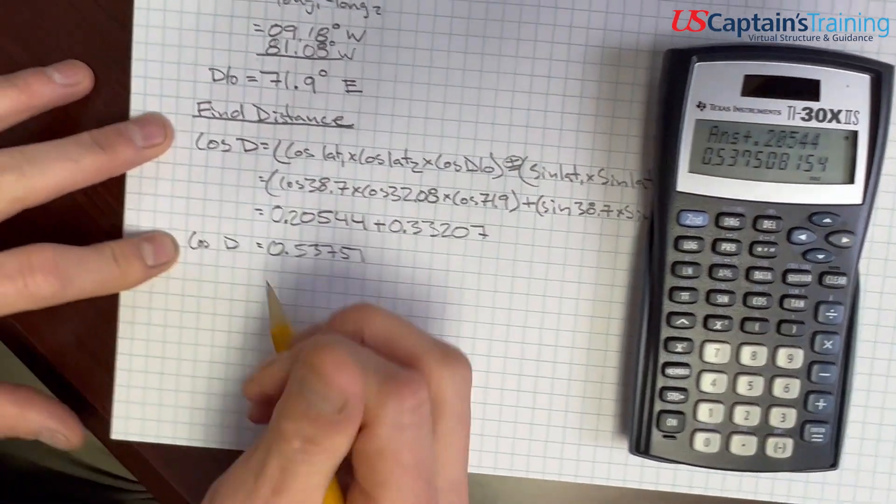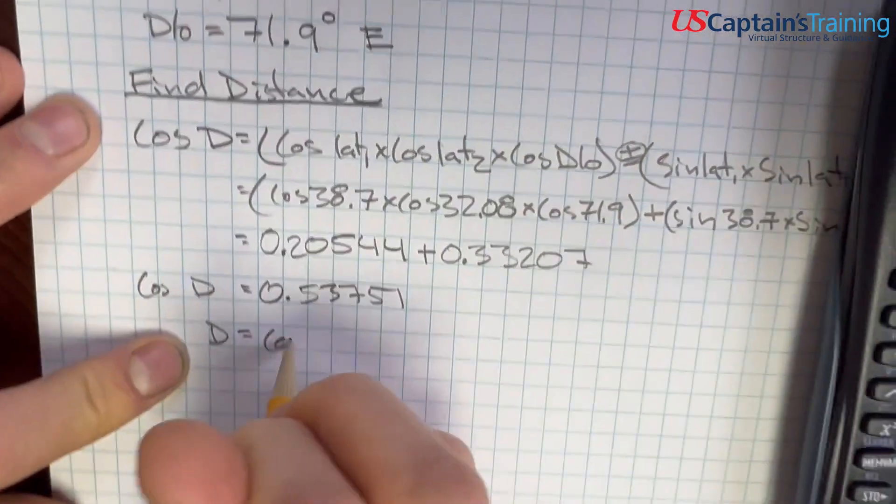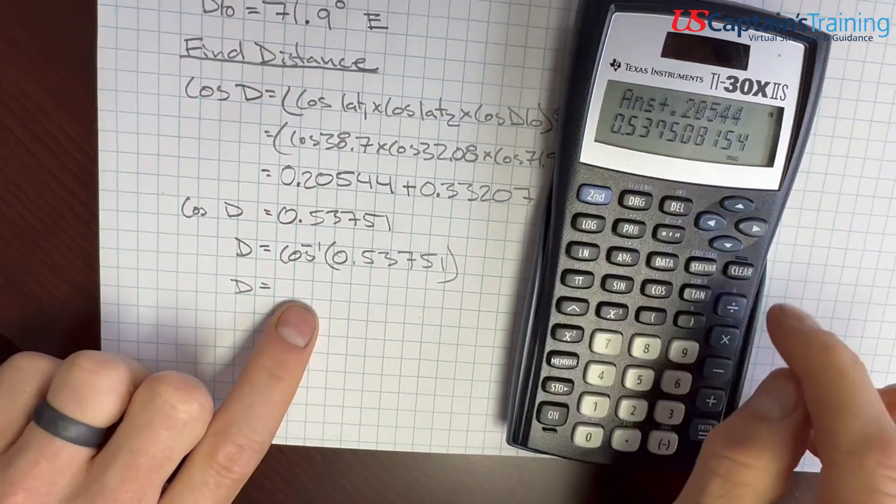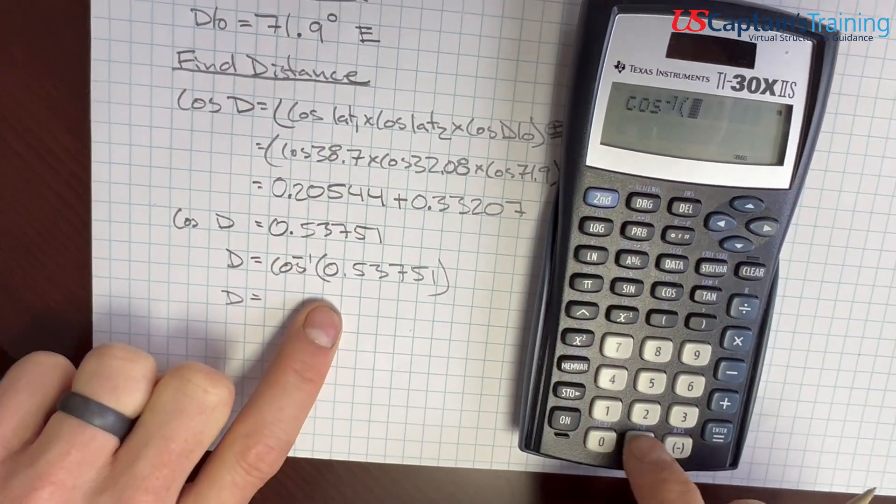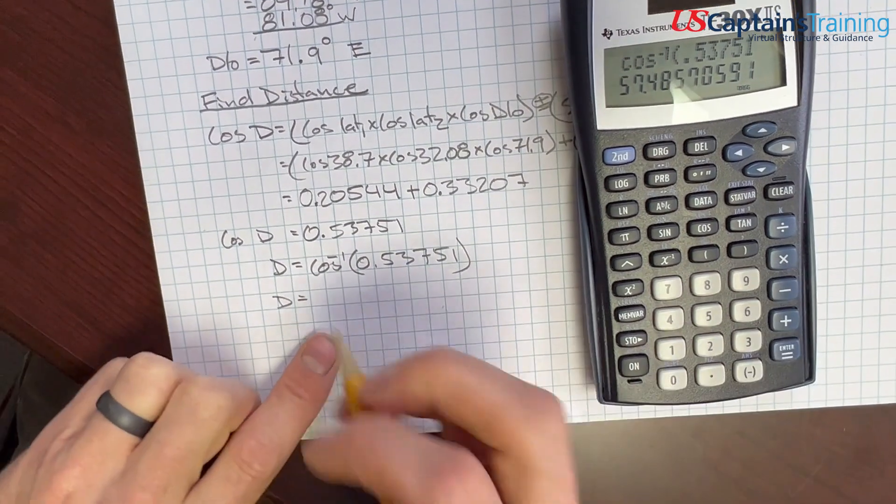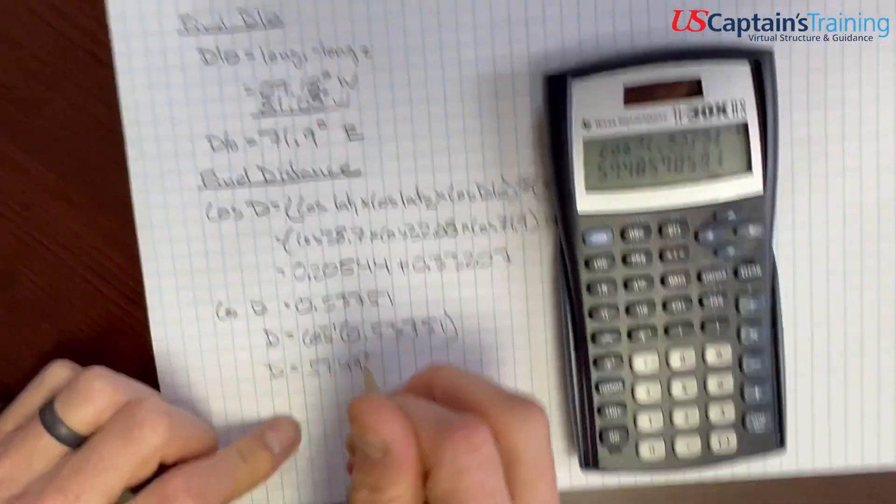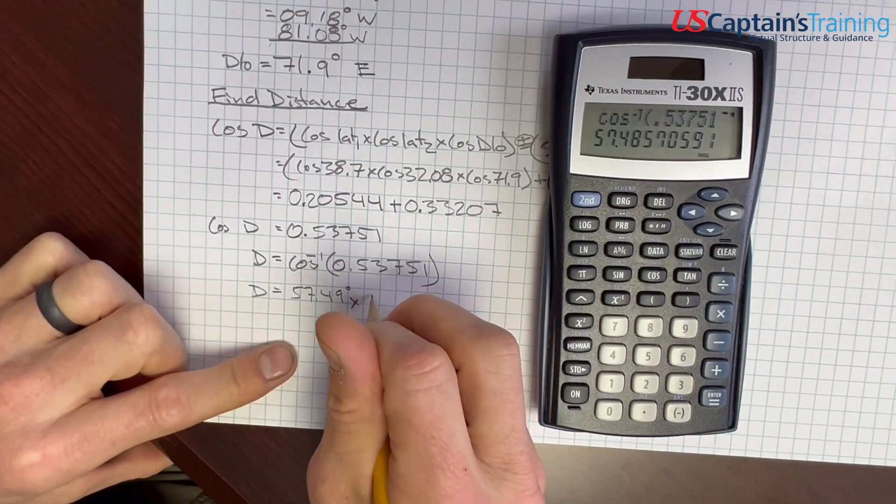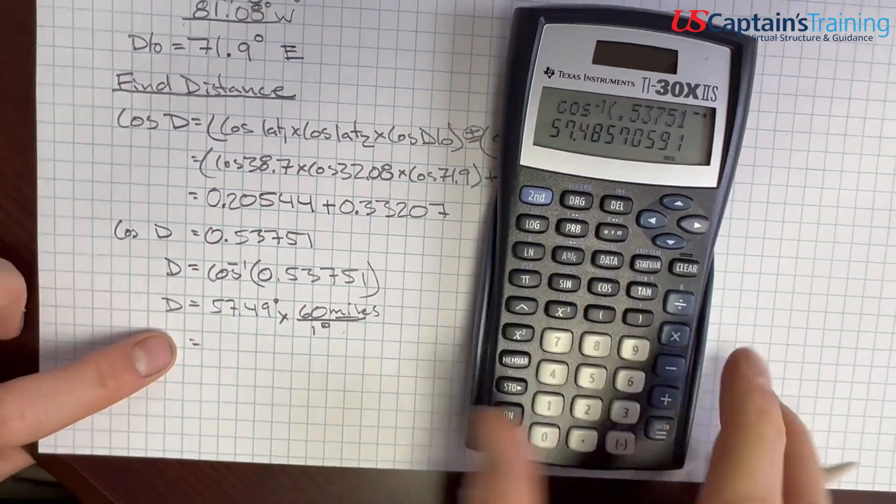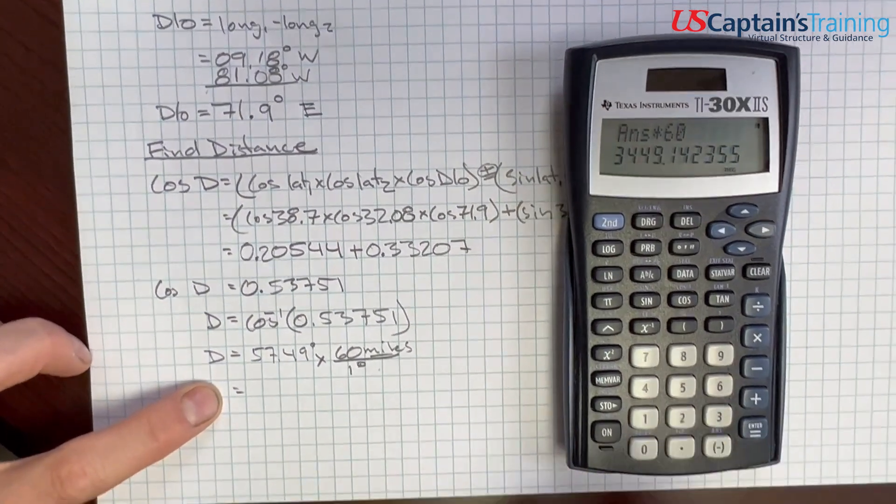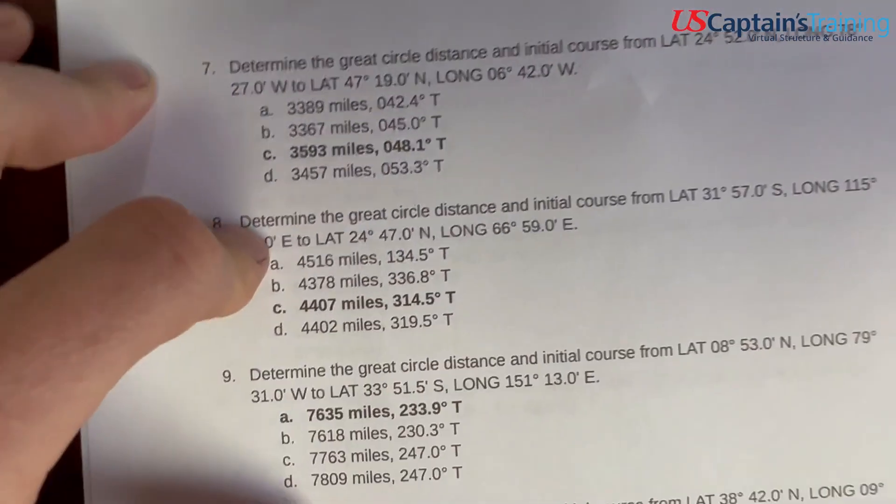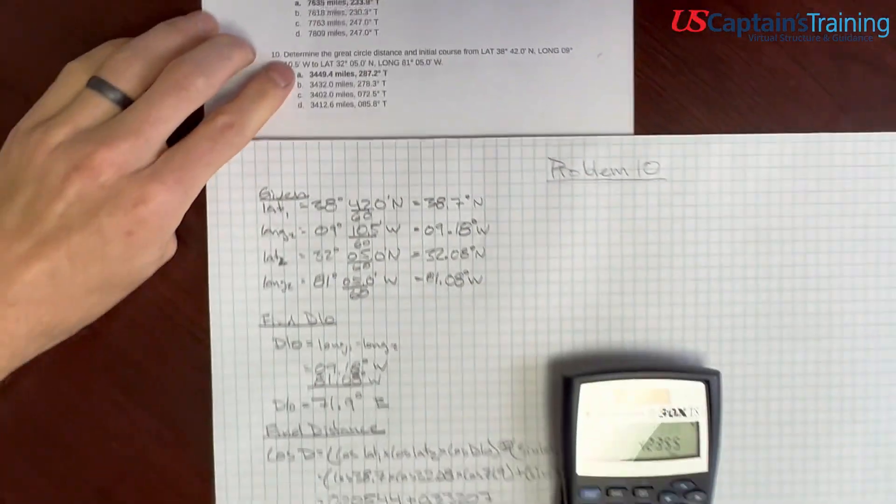Remember this is the cosine of distance, we just want distance. Distance equals the inverse cosine, 0.53751. Let's see what this distance equals, this is going to come out in degrees. Second, cosine, 0.53751, 57.49 degrees. Well, our answers in the problem are in miles, times 60 miles per one degree, degrees will cancel, you will be left with miles. So we take this and times by 60 equals 3449 miles. Let's see if we're on the right track. 3449, it's one of the choices, we seem to be on the right track, and it's actually the right choice.